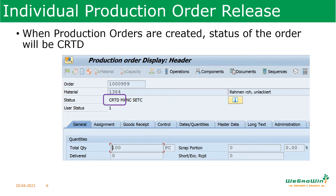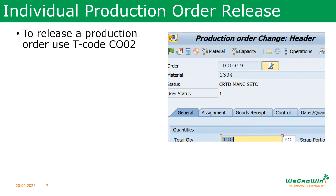Now we will see how to release the production order individually. When you have the production order in created status, you can see the status here showing as CRTD. To release the production order, we can do it using transaction CO02, or we can do it from MD04 as well. In MD04 we can see the production order, select it, and click the change button — it will bring it to the same page. Once you have CO02, enter the production order number. Now press the release flag.